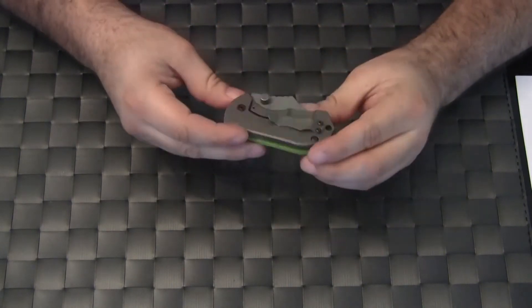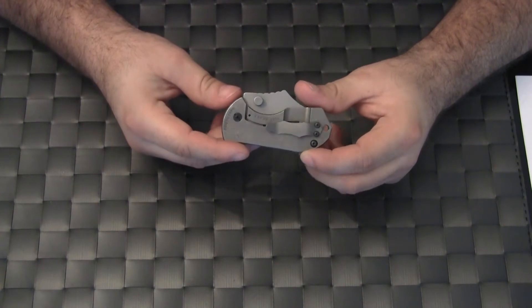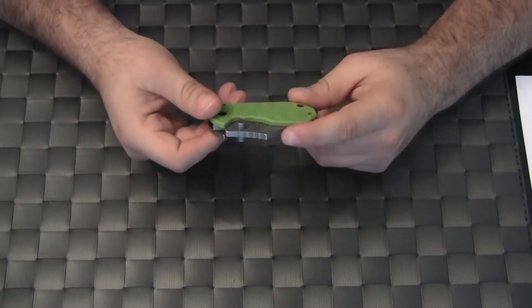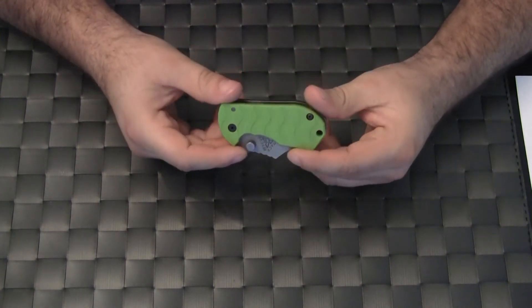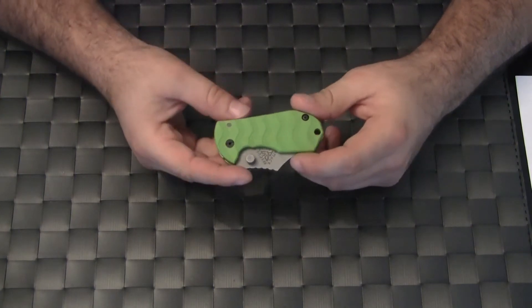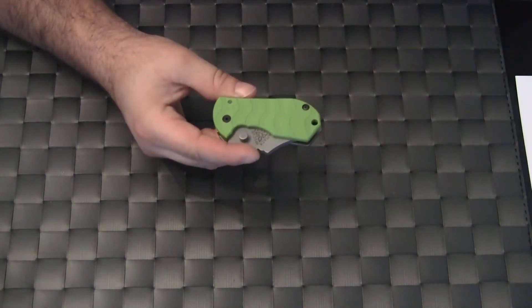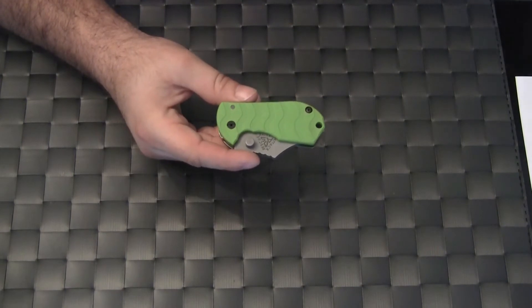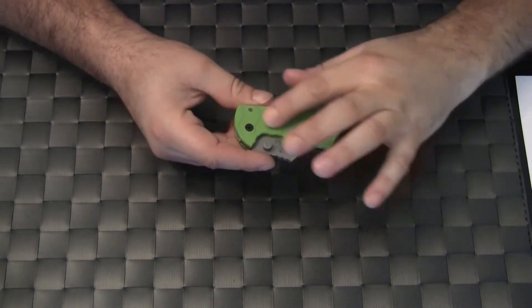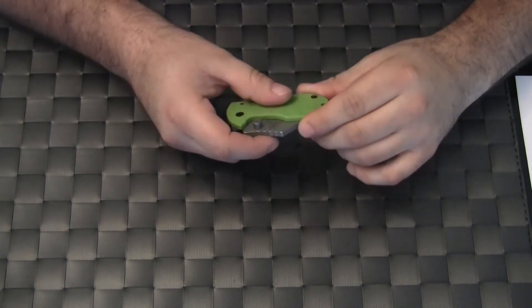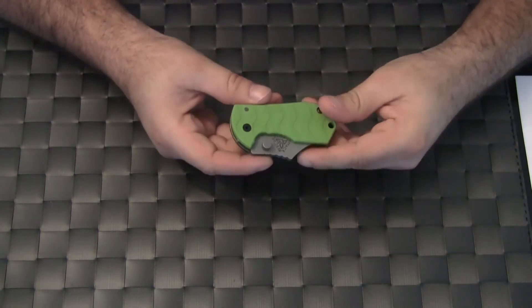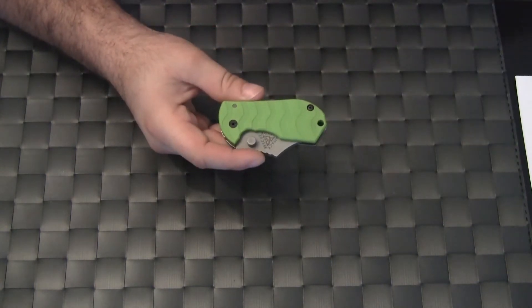The frame is a distressed titanium handle on one side and then G10 on the back. It comes in different colors. This is a light green. There is orange, tan, and dark green. I am sure it will have different colors coming out. It has a little bit of a texture to it. I do not think the texture really adds too much grip, but it is there just for aesthetics.